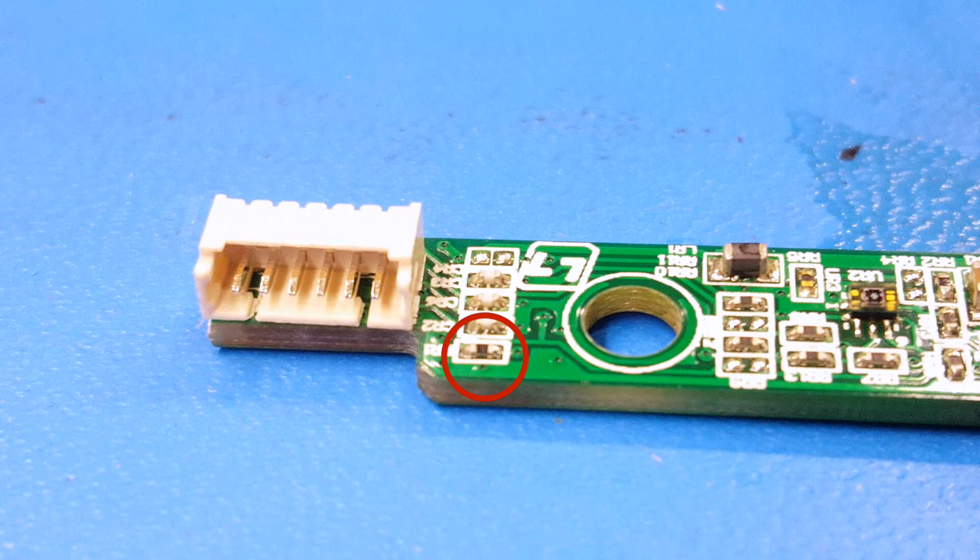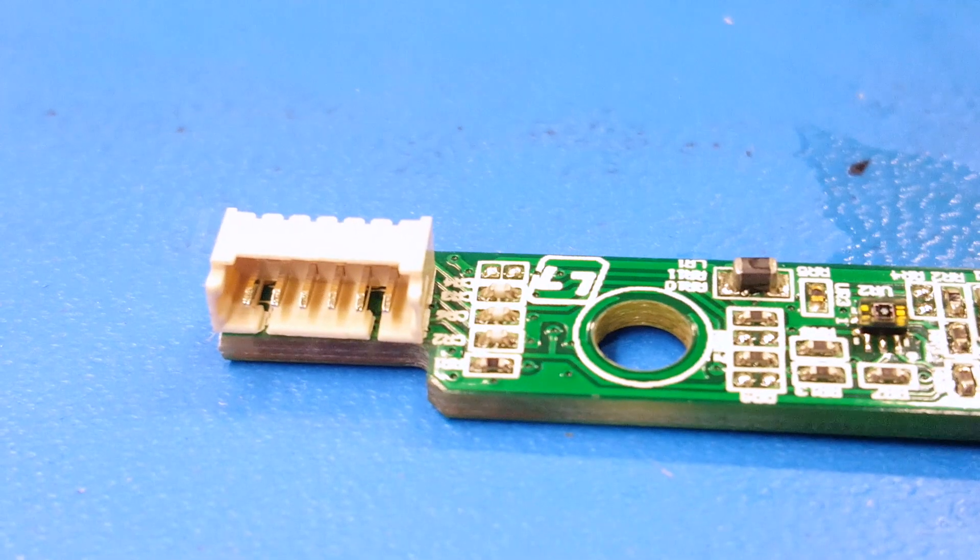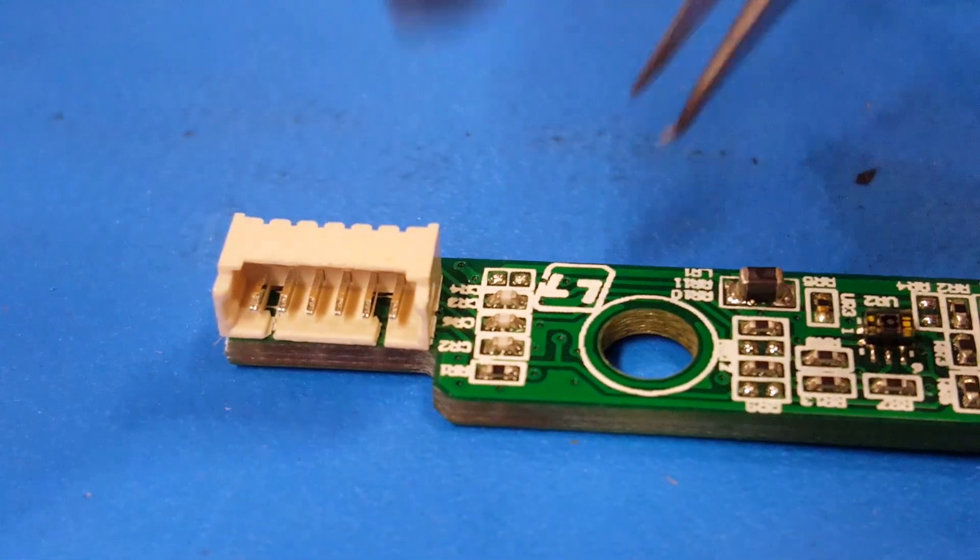I am using a hot air tool, but you can use a soldering iron if you do not have a hot air tool. I will begin by heating up the resistor and then lift it from the board with my tweezers.